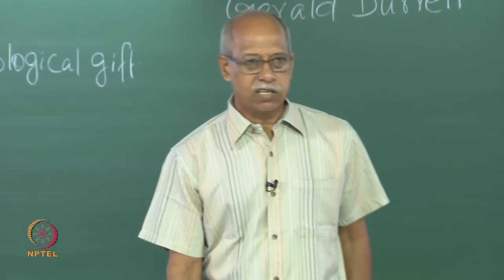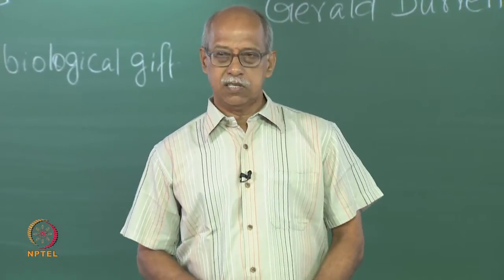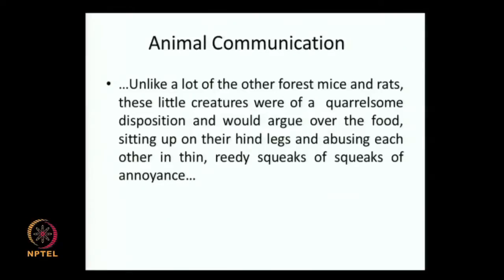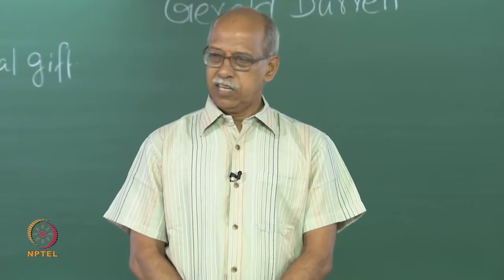Another example: unlike a lot of other forest mice and rats, these little creatures were of a quarrelsome disposition and would argue over the food, sitting upon their hind legs and abusing each other in thin, braiding squeaks of annoyance. Animals quarrel, fight, bark at each other, squeak at each other — they give certain limited calls.